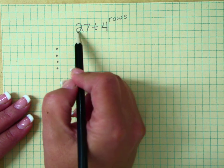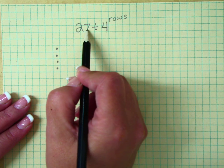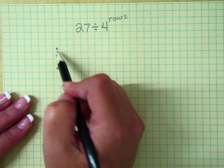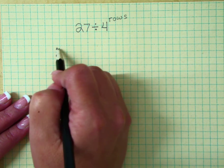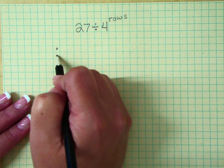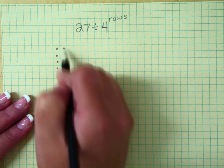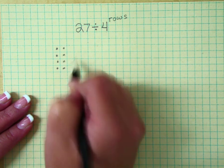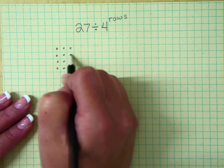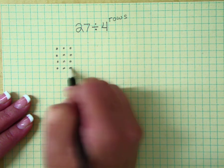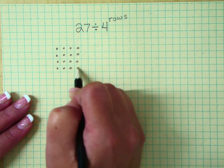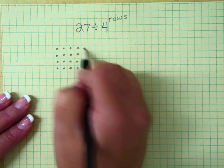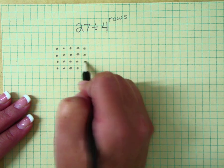Now we have 27 of something that we need to disperse into these four rows. So we've already counted out four: 1, 2, 3, 4, 5, 6, 7, 8, 9, 10, 11, 12, 13, 14, 15, 16, 17, 18, 19.